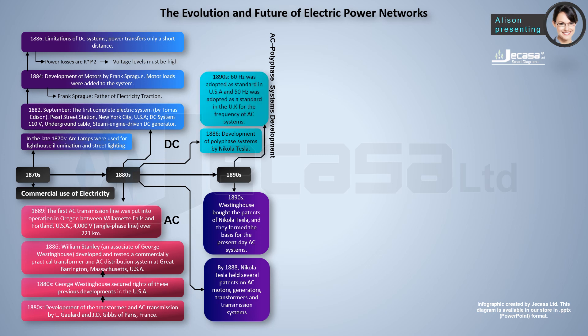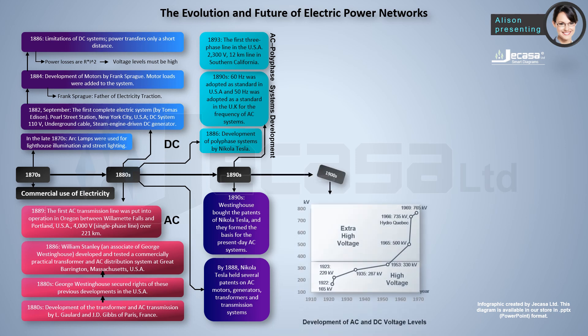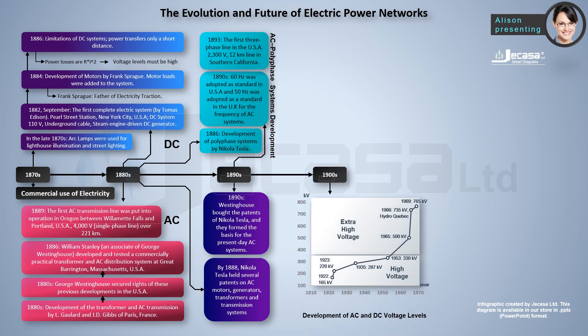In the 1890s, 60 hertz was adopted as the standard frequency for AC systems in the USA, and 50 hertz was adopted as the standard in the UK. In 1893, the first three-phase line in the USA was a 2,300-volt, 12-kilometer line in Southern California. By 1900, early AC systems were rated at 12, 44, and 60 kilovolts.